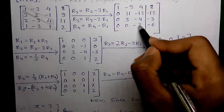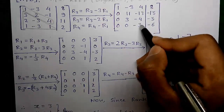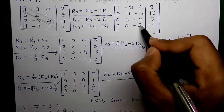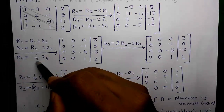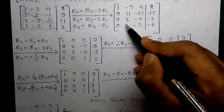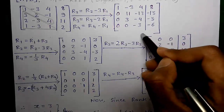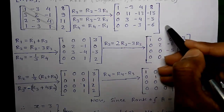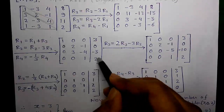Next we need a 1 at this position in row 4. If we multiply row 4 by −1/3, we get 1 there: R4 = R4 × (−1/3). So −3 × (−1/3) = +1 and −6 × (−1/3) = +2. This is our new row 4.